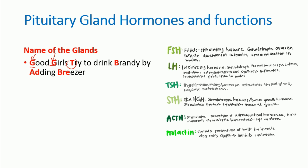T stands for thyroid, so one hormone acts on the thyroid gland. B stands for body — somatic body cells. AD stands for the adrenal gland. And BRE represents the breasts. So these are the different target glands where all the pituitary gland hormones work.